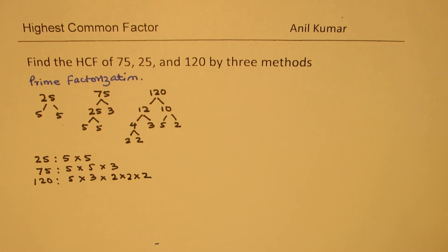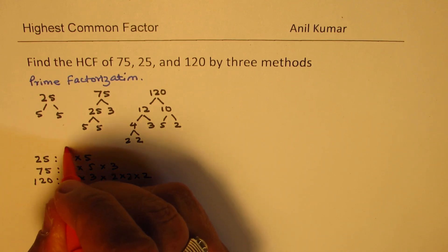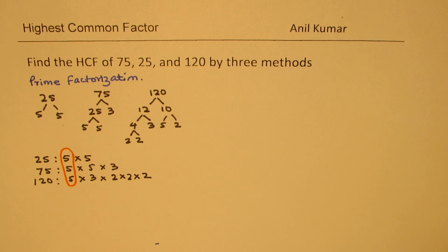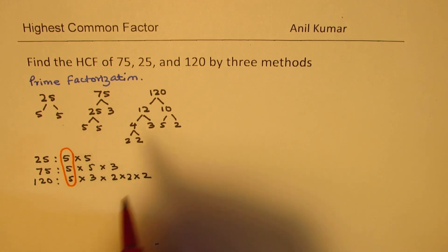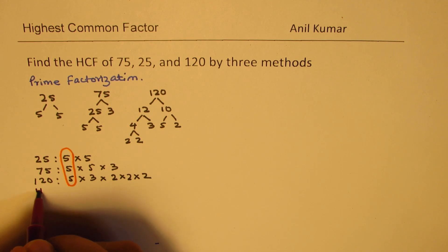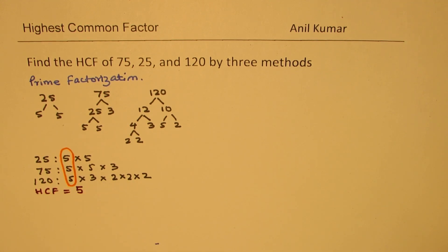Now, out of these factors, let's list what are the common factors for all three of them. Well, the only common factors for all three of them is 5 and therefore, in this case, we have HCF equals to 5. So, that is one way of doing it.